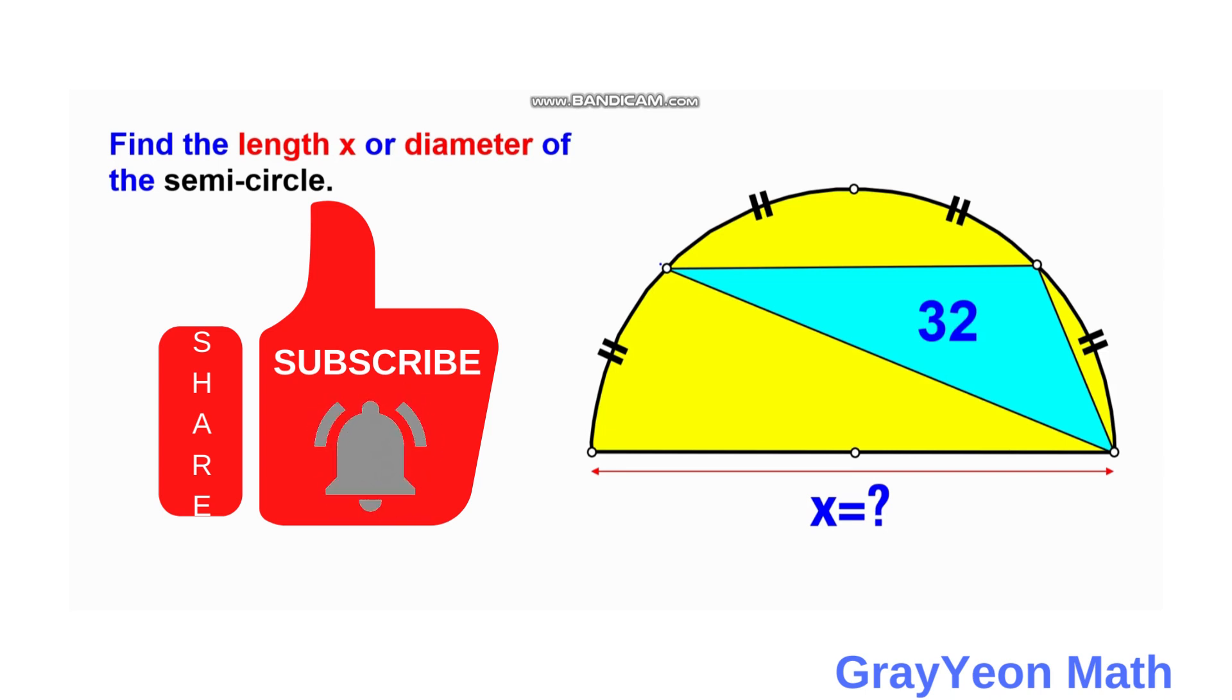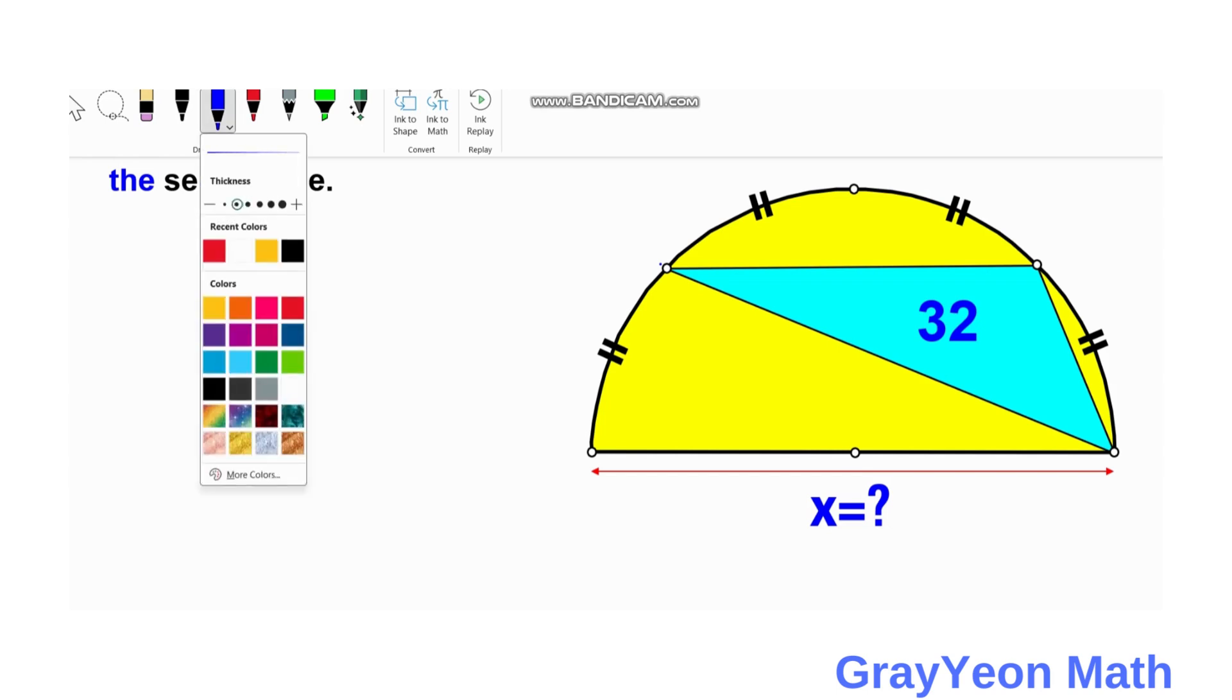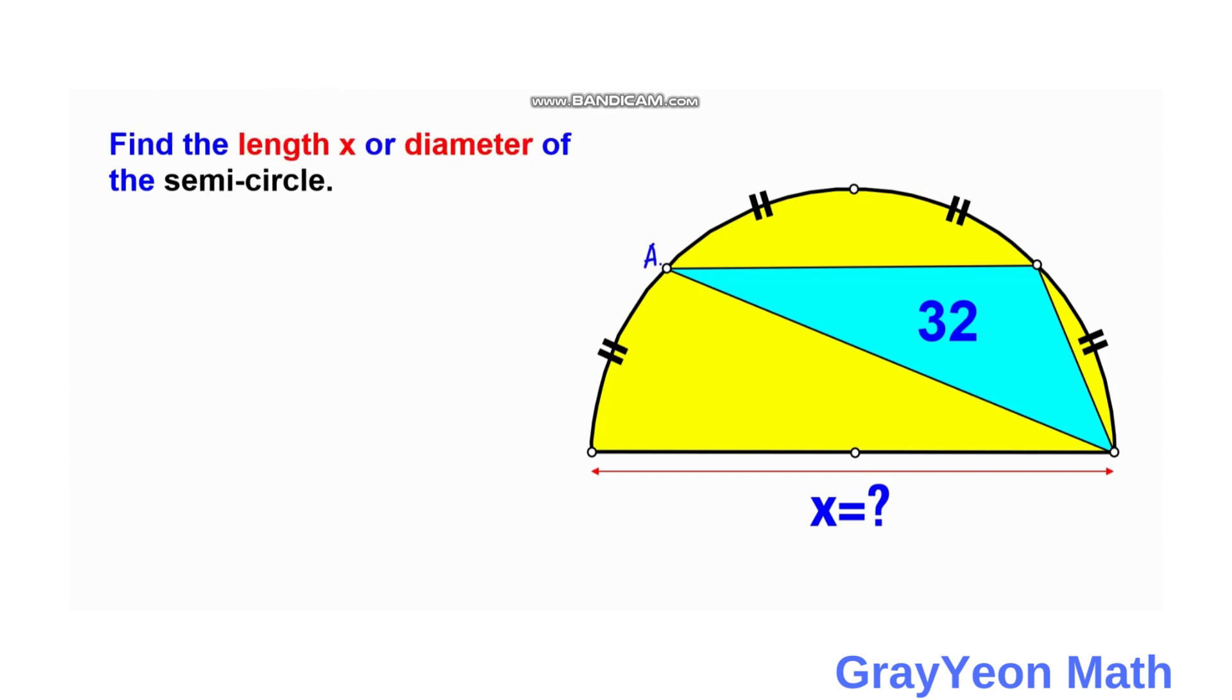We are required to find the diameter of the semicircle. Let us first label the points of this triangle to be A, B, and C. We can also label the center of the semicircle as O.